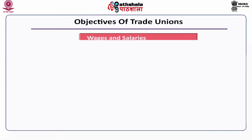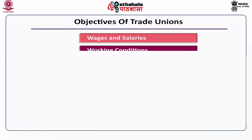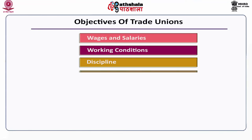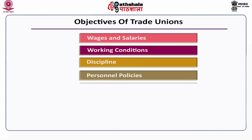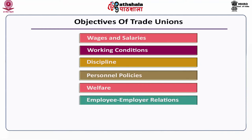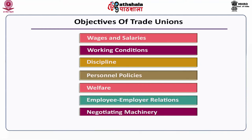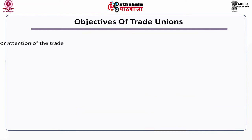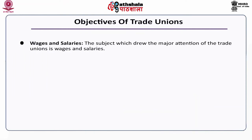Regarding the objectives of trade union, we have eight prominent sets of objectives: wages and salaries, working conditions, discipline, personal policies, welfare, employee-employer relations, negotiating machinery, and lastly safeguarding organizational health and the interest of the industry. The very first is wages and salaries — the subject which drew the major attention of the trade union.